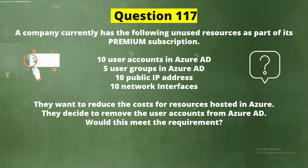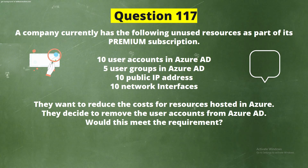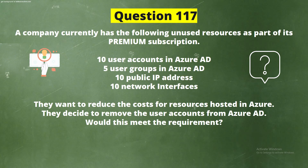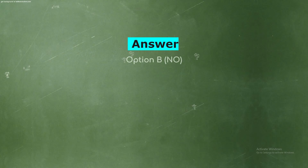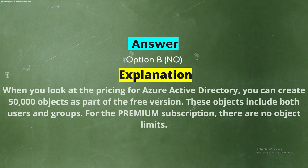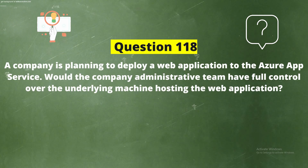Question 117: A company has unused resources including 10 user accounts and 5 user groups in Azure AD, 10 public IP addresses, and 10 network interfaces. They want to reduce costs and decide to remove user accounts from Azure AD. Would this meet the requirement? The correct answer is Option B: No. Azure Active Directory allows creation of 50,000 objects (users and groups) in the free version, and the premium subscription has no object limits, so removing accounts does not reduce cost.